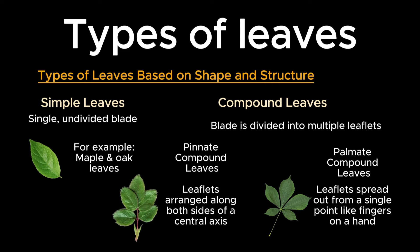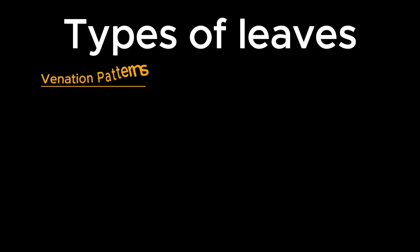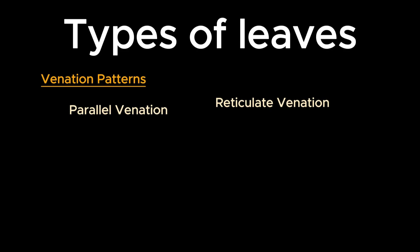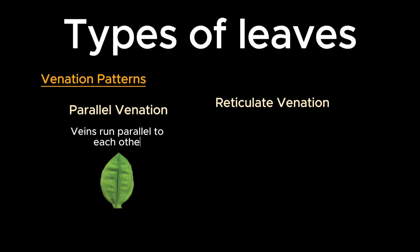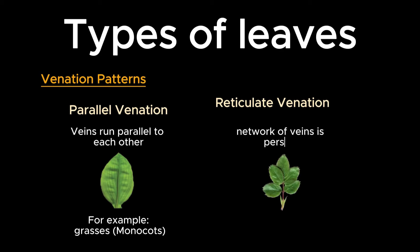The next feature botanists use to classify leaves is venation pattern, which refers to how veins in the leaves are arranged. Two types of venation patterns are seen in leaves: parallel venation and reticulate venation. In parallel venation, veins run parallel to each other, and they are common in monocots like grasses and lilies. In reticulate venation, a network of veins is found, and they are common in dicots like roses and oaks.